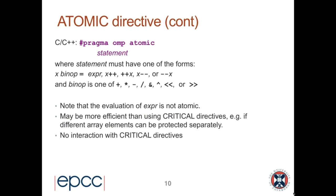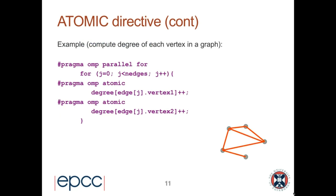One important thing: atomic and critical do not interact with each other. In the same parallel region, you cannot protect an update with atomic in one place and critical elsewhere and expect mutual exclusion between those two. Critical mutually excludes with critical, and atomic with atomic, but not across each other.